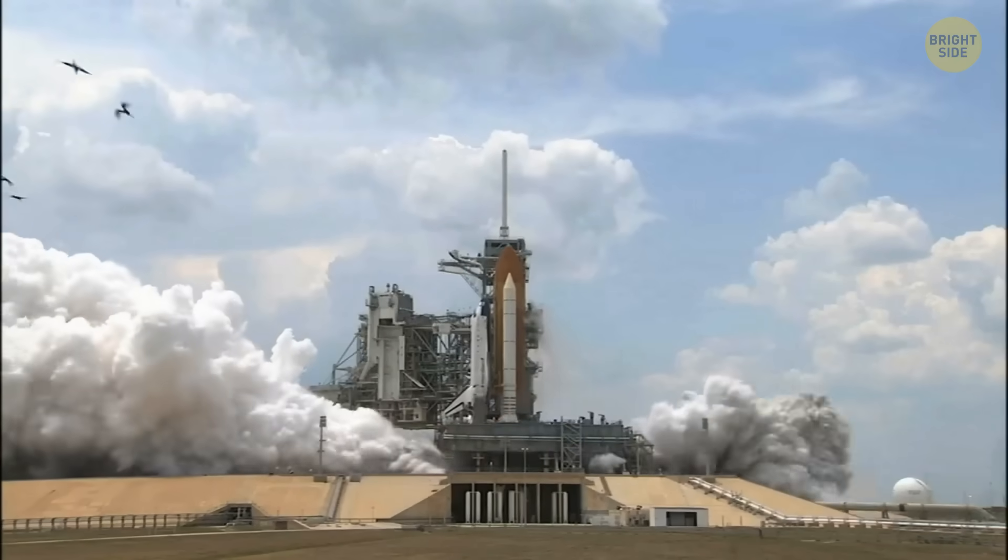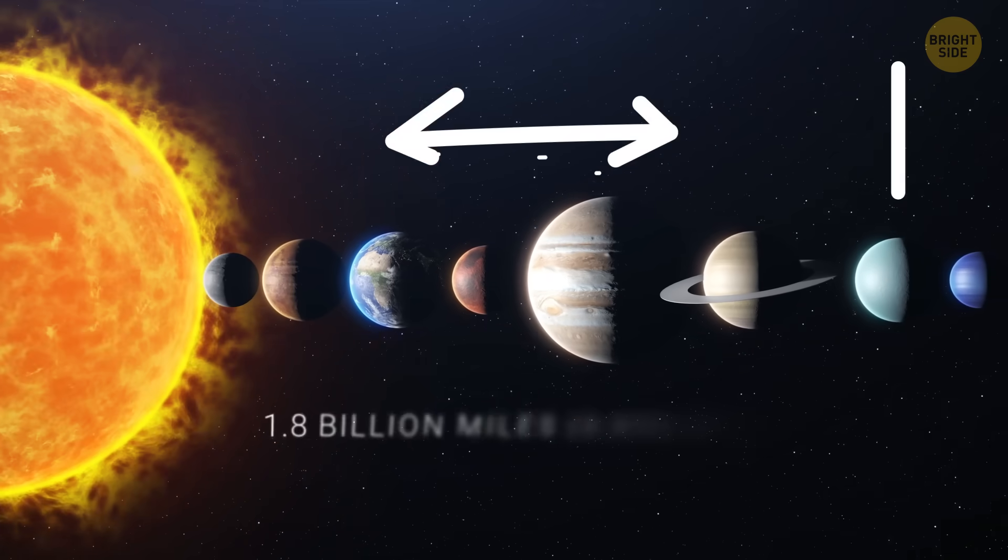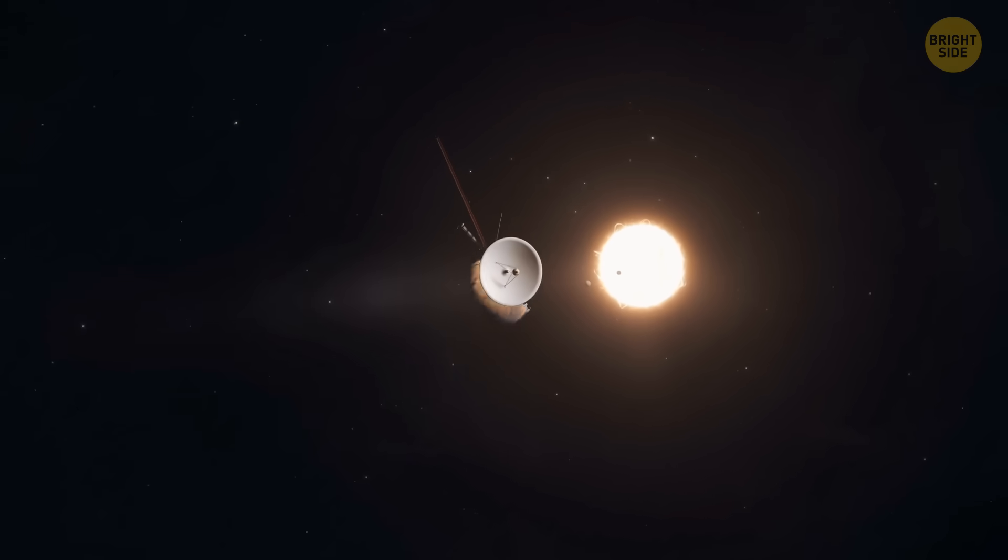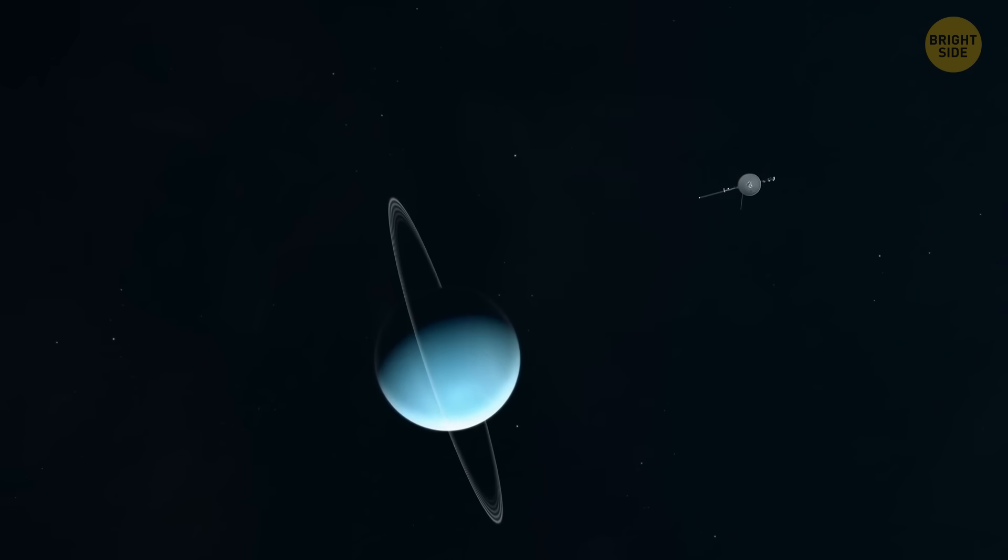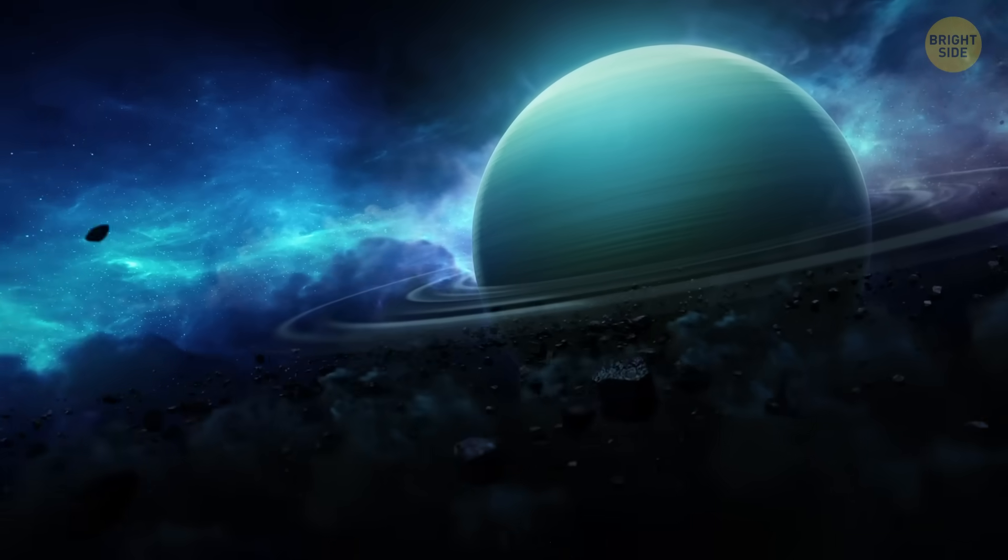Now, before you start packing for Uranus, let's remember this is a moon orbiting a gas giant that's about 1.8 billion miles away from us. Visiting it isn't as simple as booking a plane ticket. Voyager 2 is the only spacecraft that's ever gotten even close, and that was almost 40 years ago. We have better photos of Mars's sand dunes than we do of most Uranian moons.